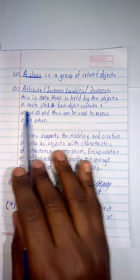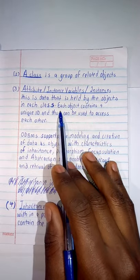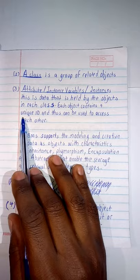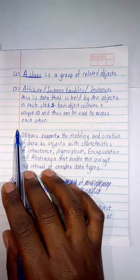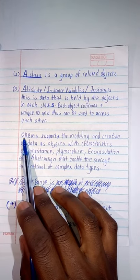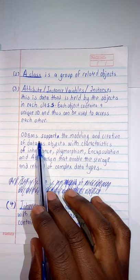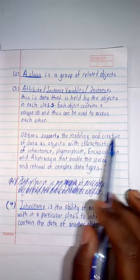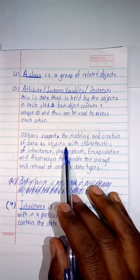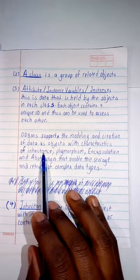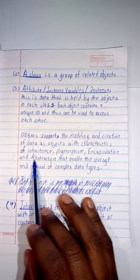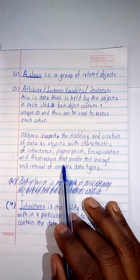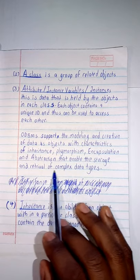Each object contains a unique ID and thus can be used to access each other. The object-oriented database model supports the modeling and creation of data as objects with the characteristics of inheritance, polymorphism, encapsulation, and abstraction that enable the storage and retrieval of complex data types.